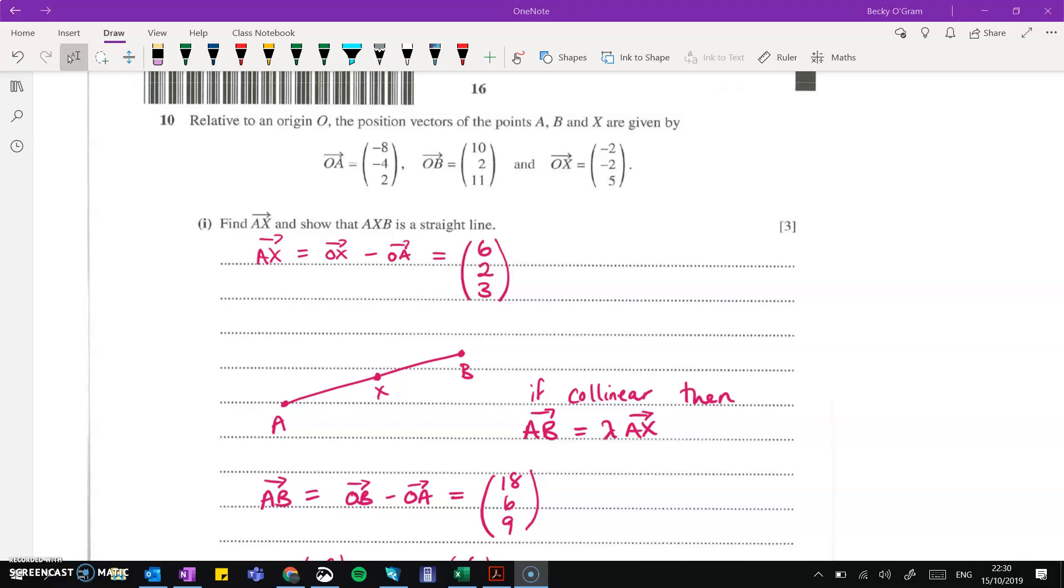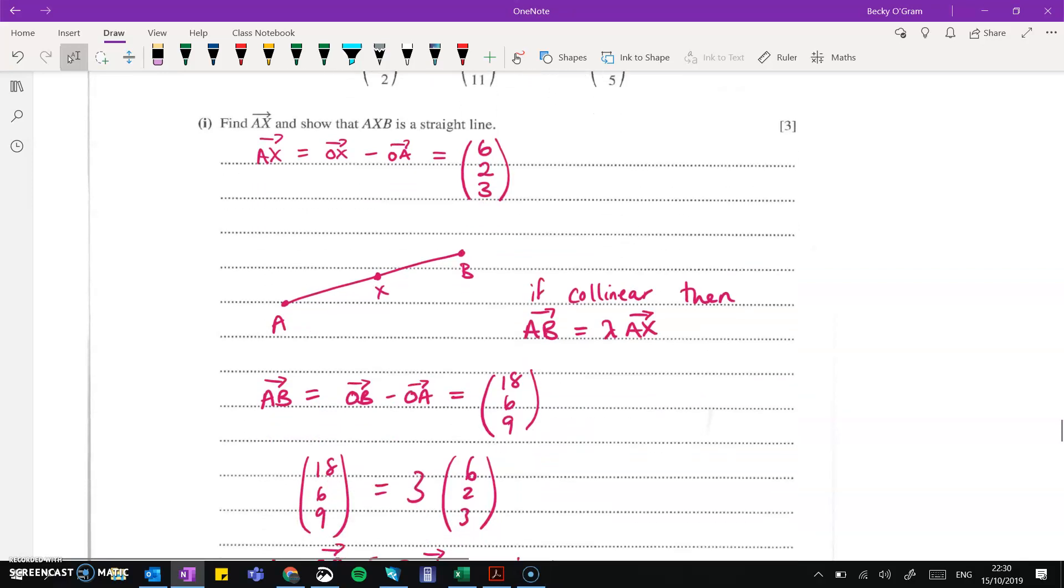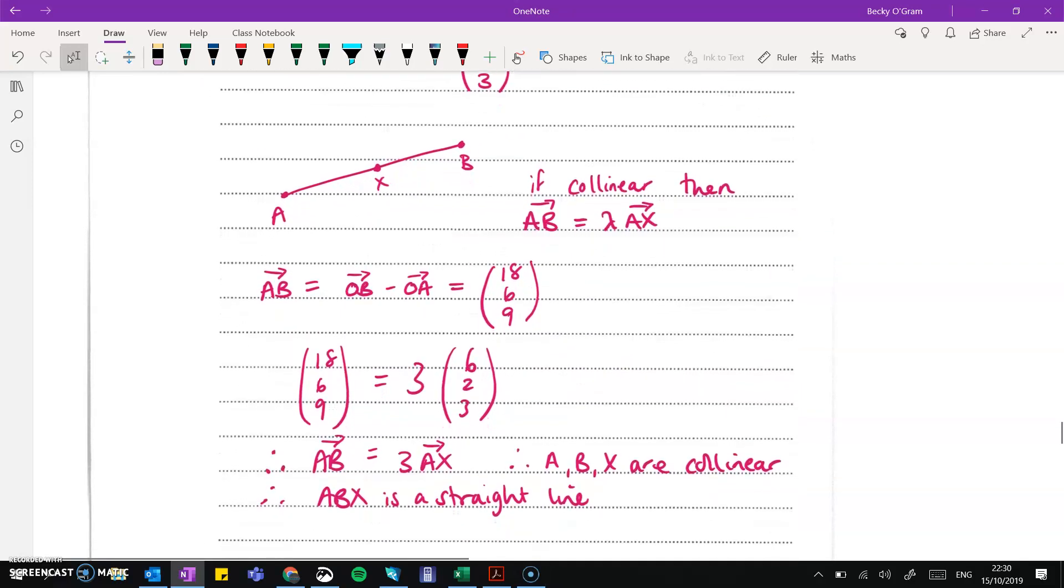So if it's a straight line, another way of saying that is that they're collinear. And if they're collinear, then one will be a multiple of the other. So we've already worked out a, x, now we work out a, b, and we state that one is a multiple of the other.